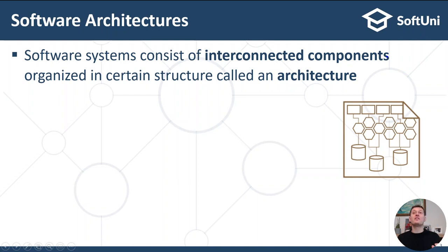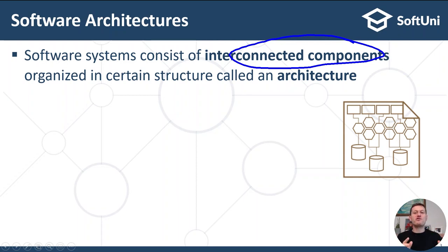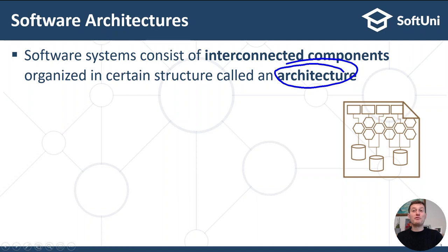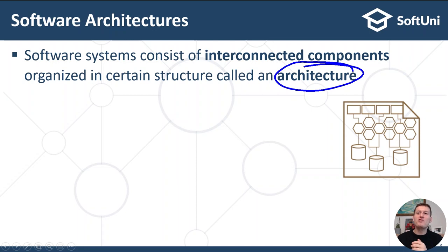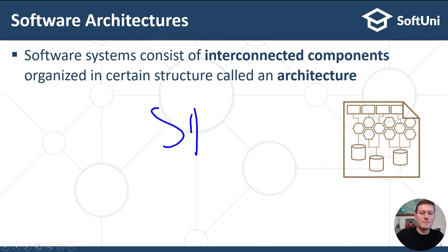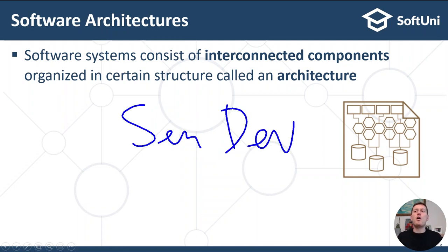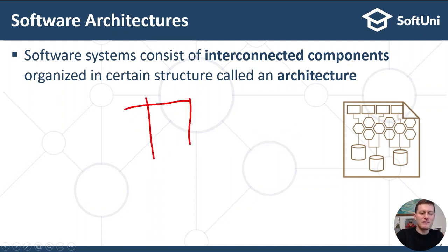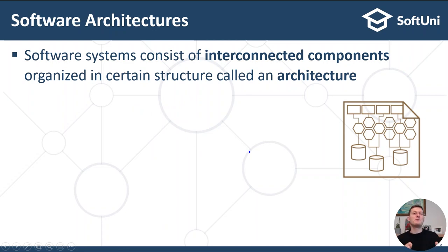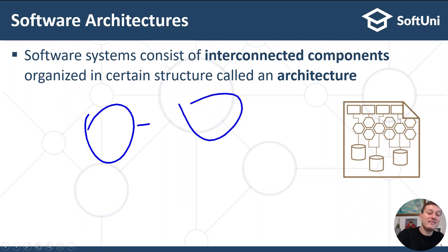Software systems consist of interconnected components which are organized in a certain structure called architecture. Software architecture is a broad engineering discipline. In large organizations the architecture is designed by the software architects. In small organizations the architecture is designed by senior developers or by the team leader. The software architecture defines the structure of the system, its components and interactions.